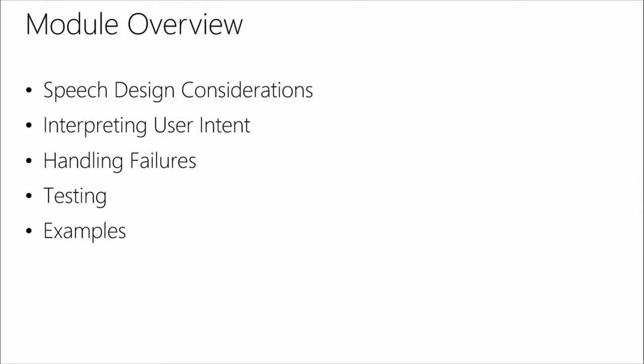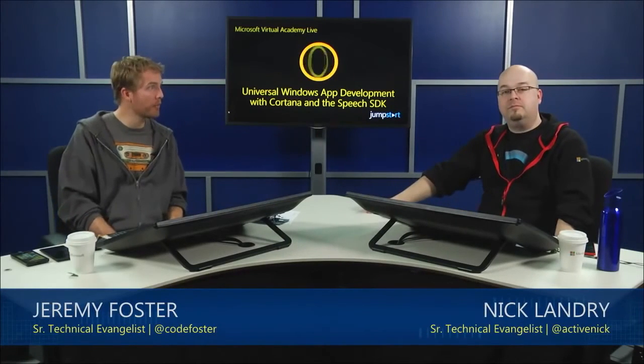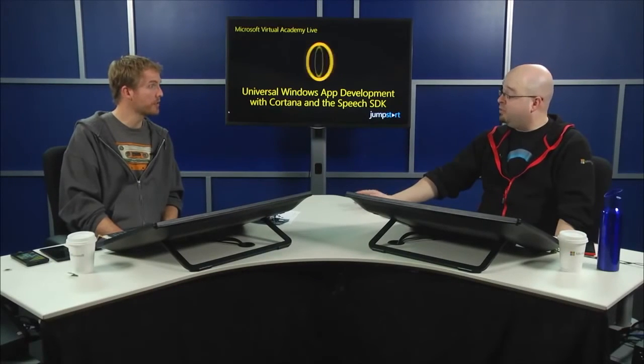To wrap up this module: they looked at speech design considerations to make sure apps treat speech as personal, experiential, critical, and fun. They also covered using fuzzy logic to interpret user intent, handling failures, testing, and reviewed several examples that make for good user experiences. Module 6 will include building an app in five minutes using AppStudio that supports speech.